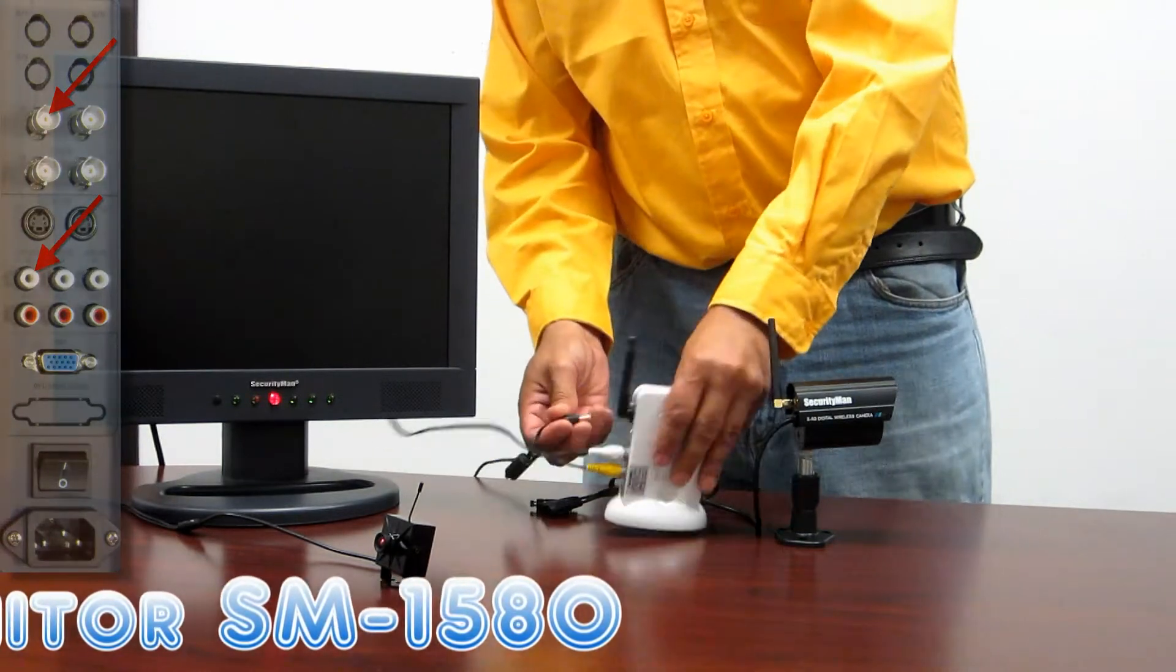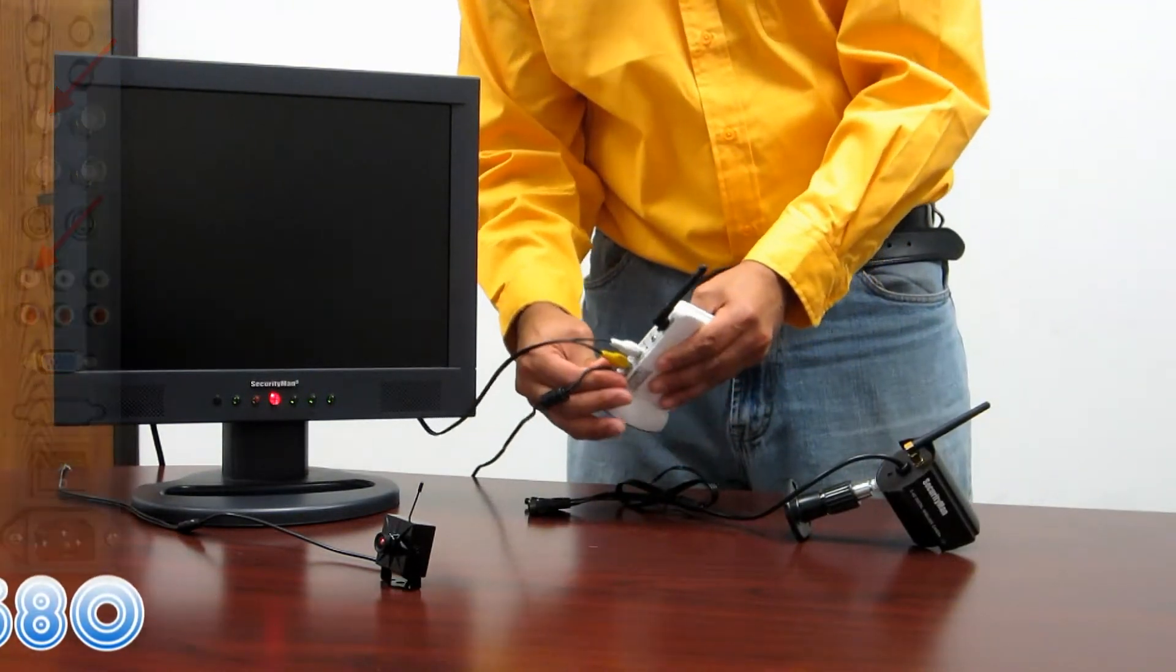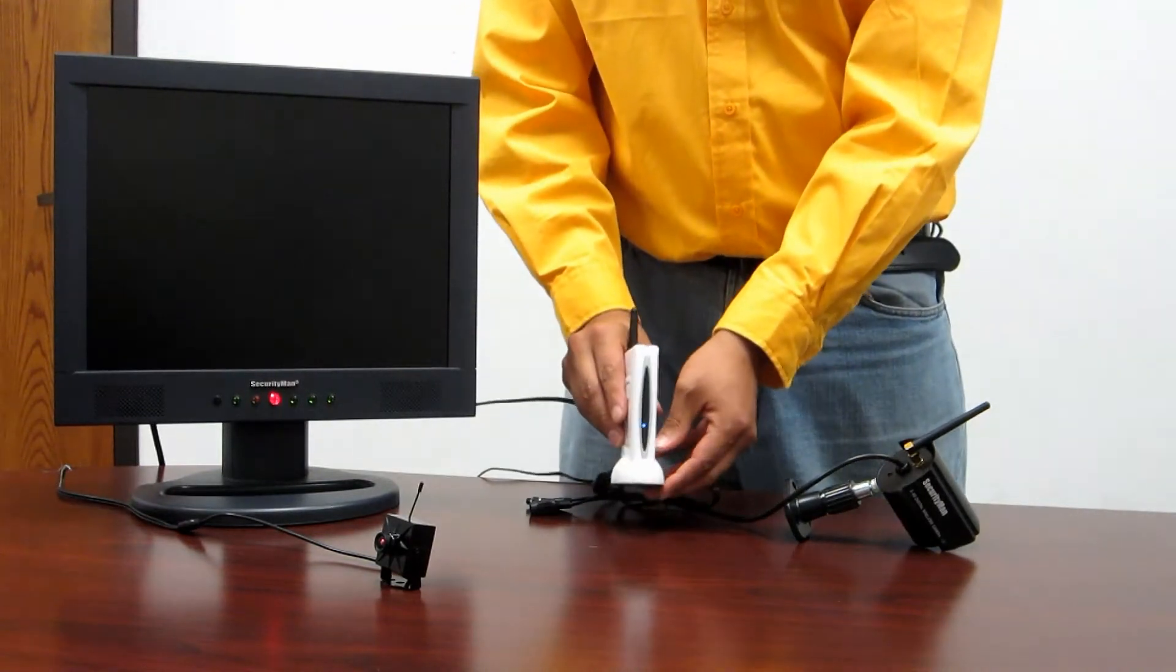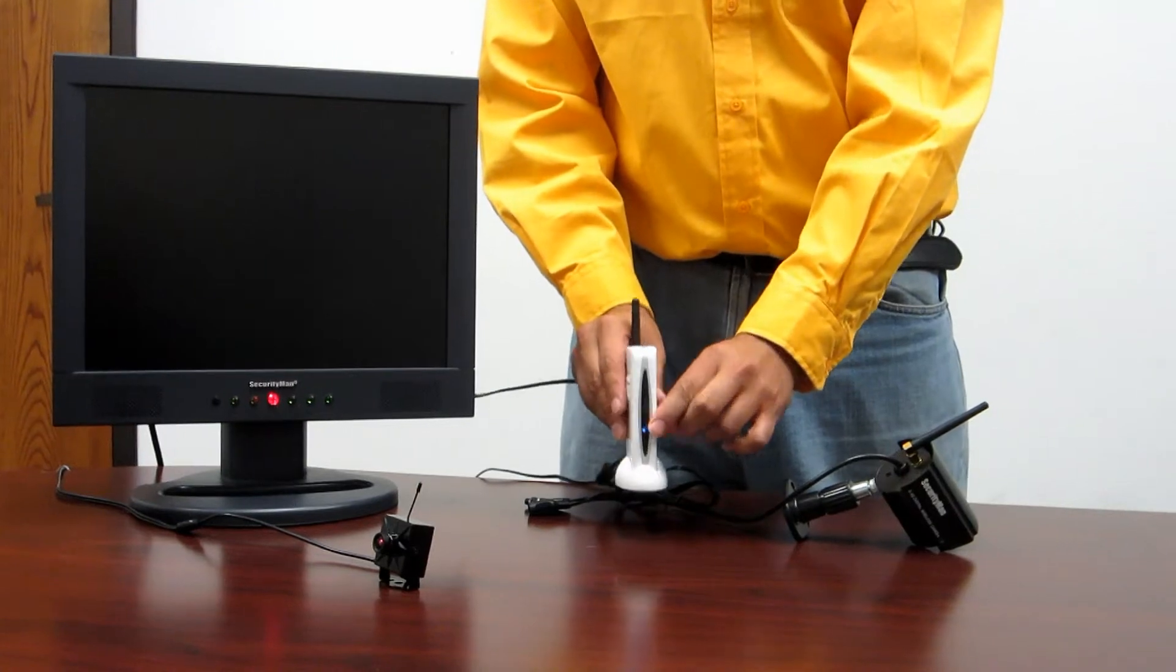Now what you want to do is go ahead and power up your receiver. There is no power switch on the receiver itself, so as soon as you plug in the power you will get a little blue light indicating that it's on.